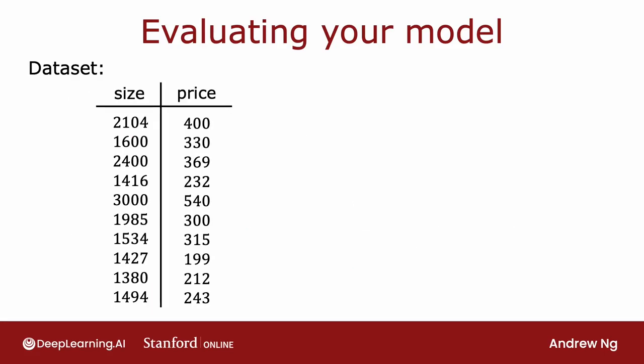If you have a training set, and this is a small training set with just 10 examples listed here, rather than taking all your data to train the parameters w and b of the model, you can instead split the training set into two subsets. I'm going to draw a line here, and let's put 70% of the data into the first part, and I'm going to call that the training set. And the second part of the data, let's say 30% of the data, I'm going to put into a test set.